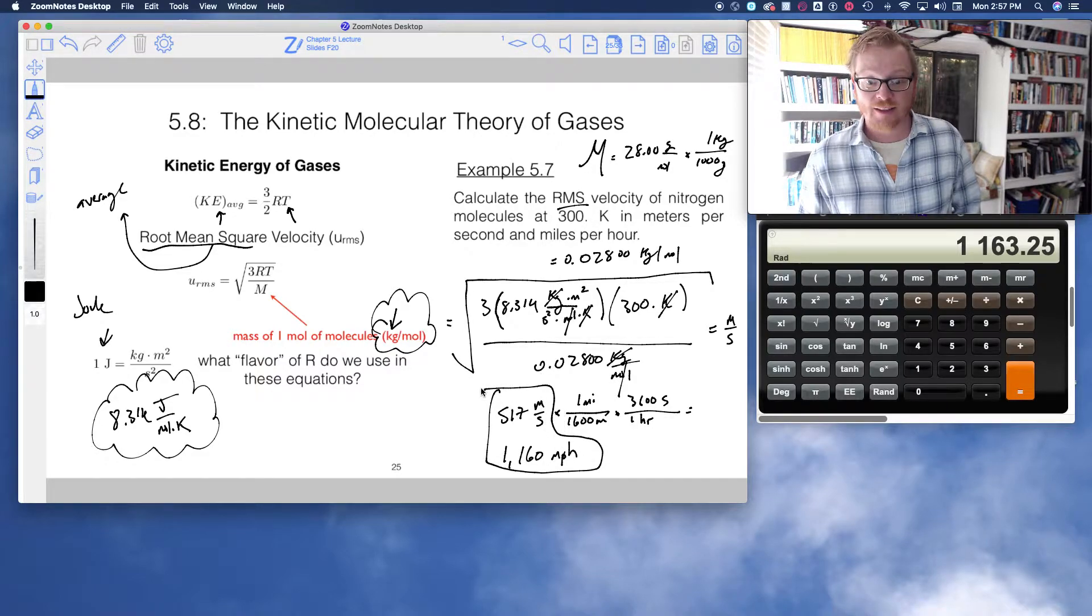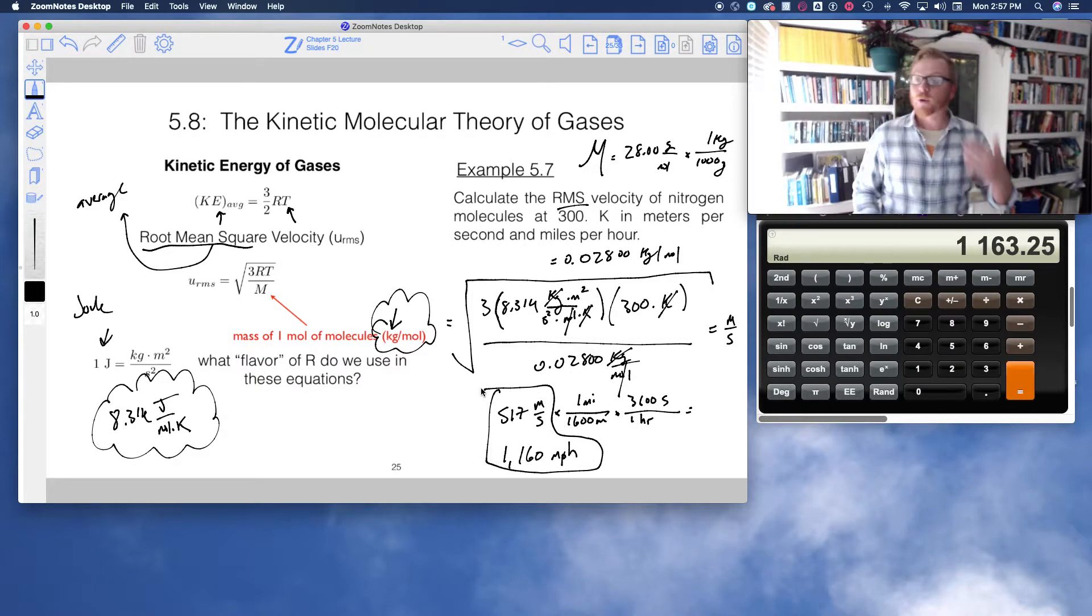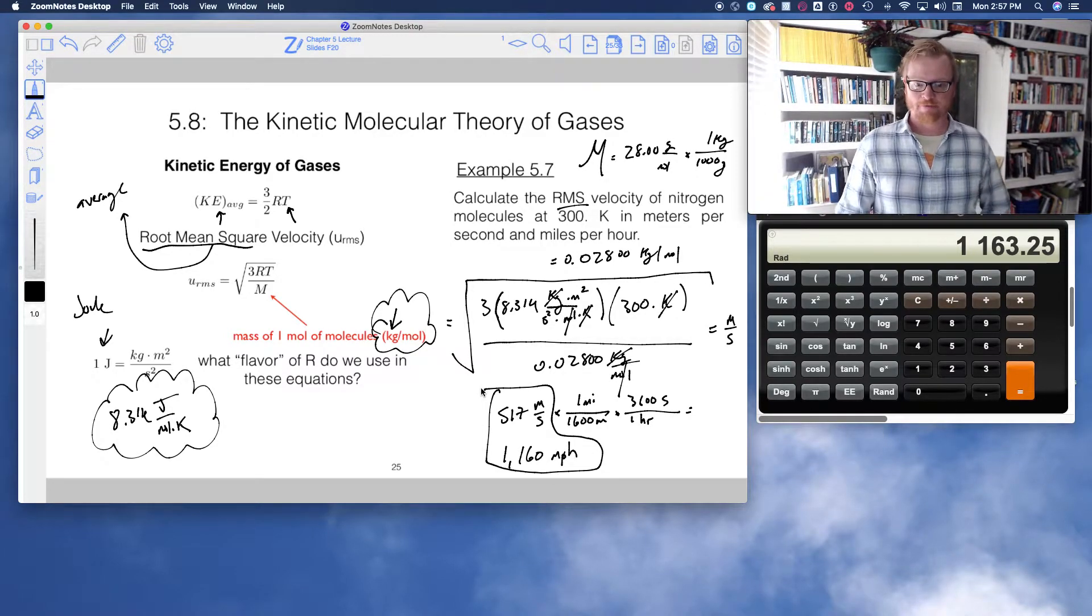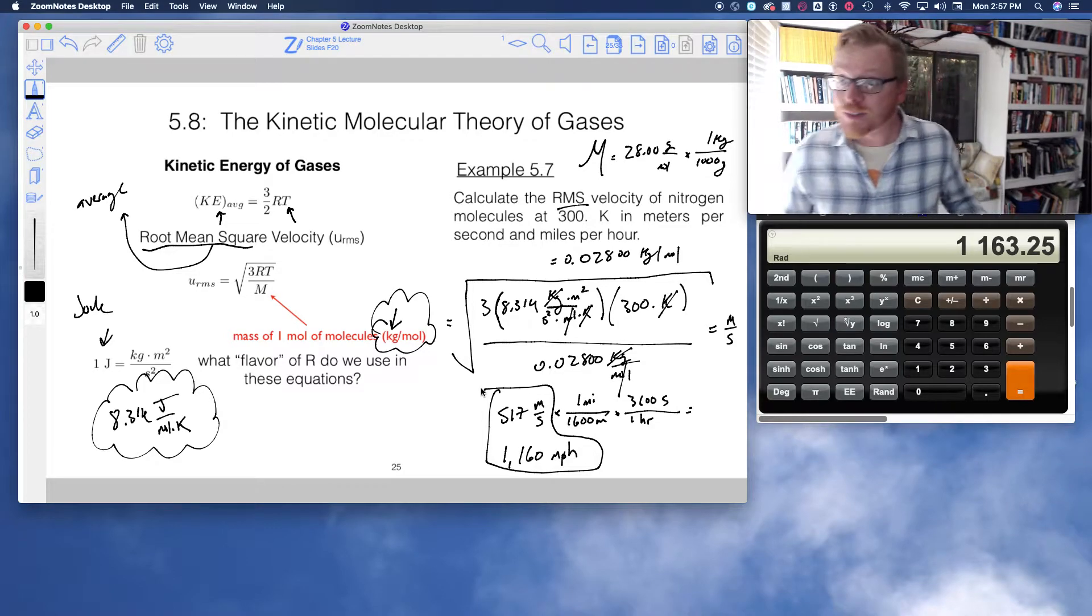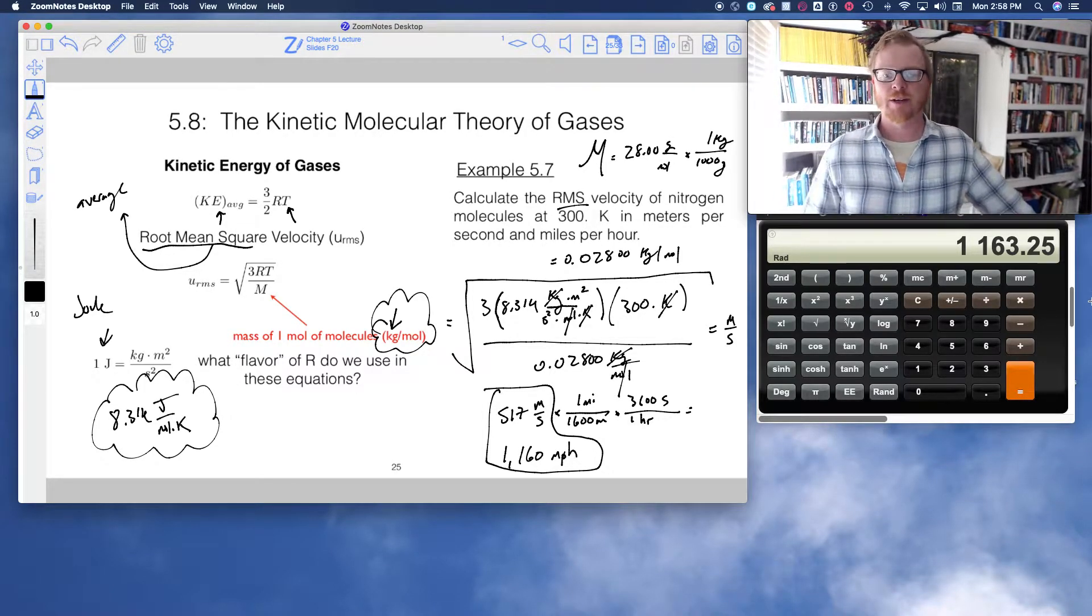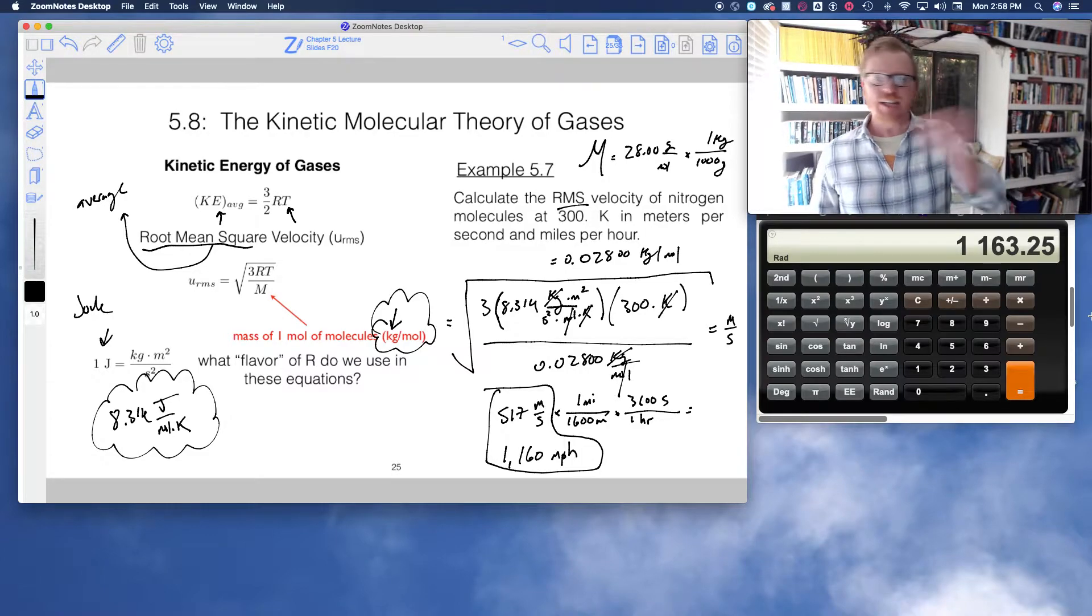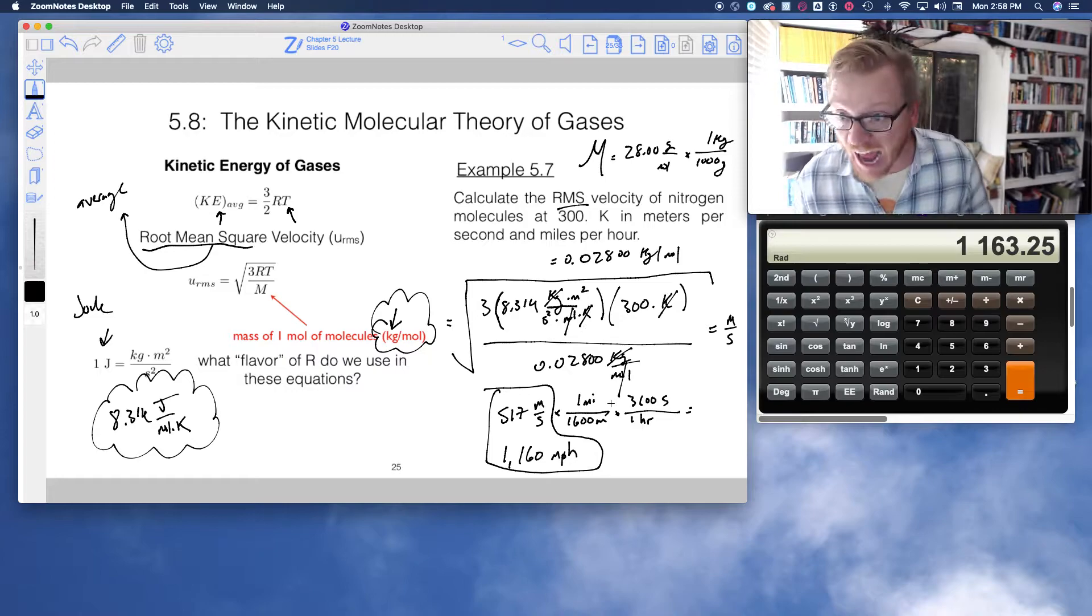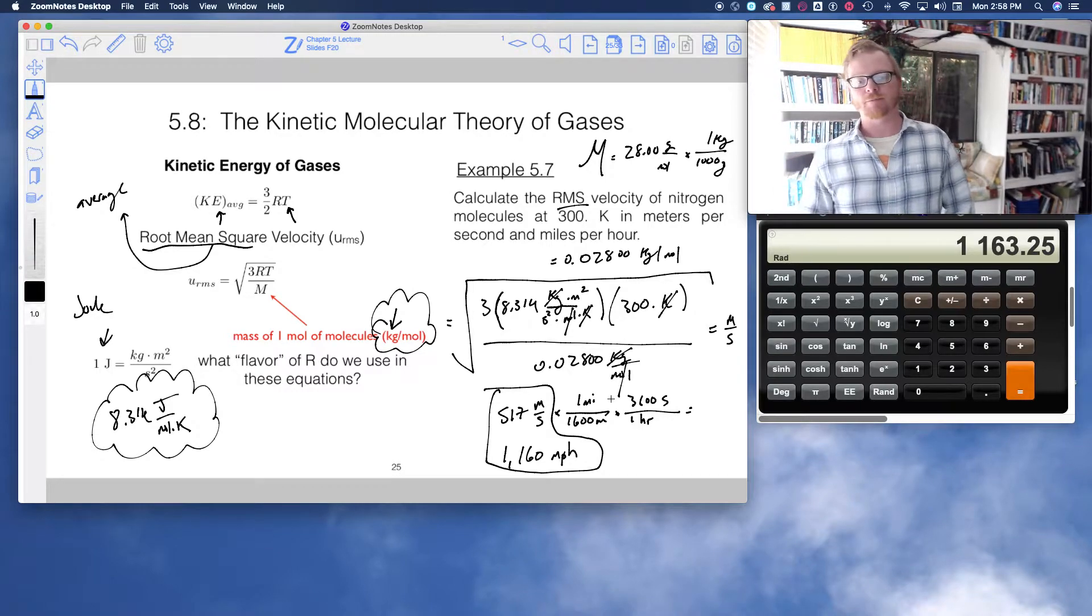Yes. This is for real. Molecules move incredibly fast. Right now, it's about 300 Kelvin. It's a little bit colder than 300 Kelvin. But all the same, there's nitrogen molecules zipping by me at 1,000 miles an hour. Seriously.